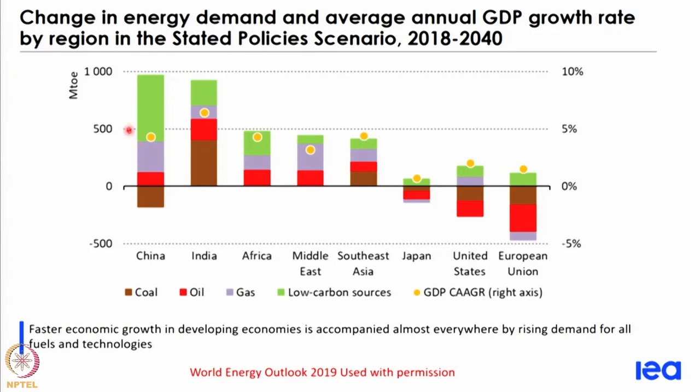The World Energy Outlook is produced by the International Energy Agency every year. I am going to show you some slides from the IEA's World Energy Outlook 2019. The first slide shows the change in energy demand and average annual GDP growth rate by region. In this there are two scenarios: a stated policy scenario based on existing policies, and an aggressive sustainable development scenario.